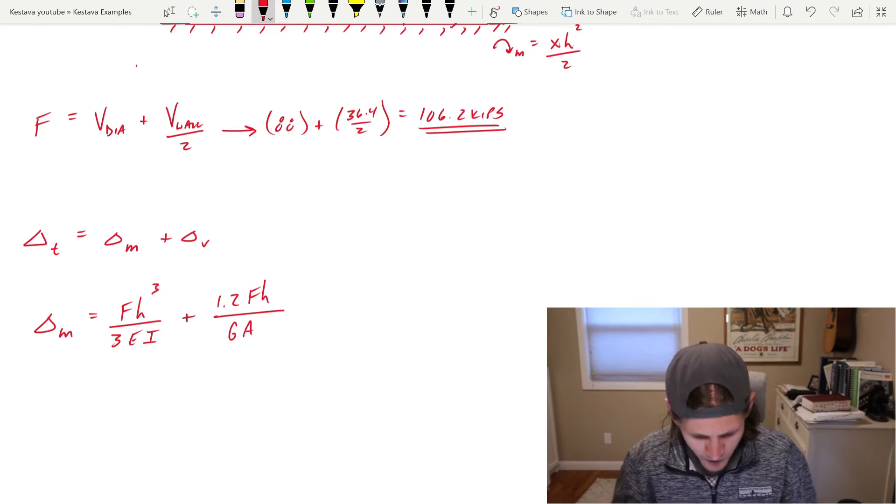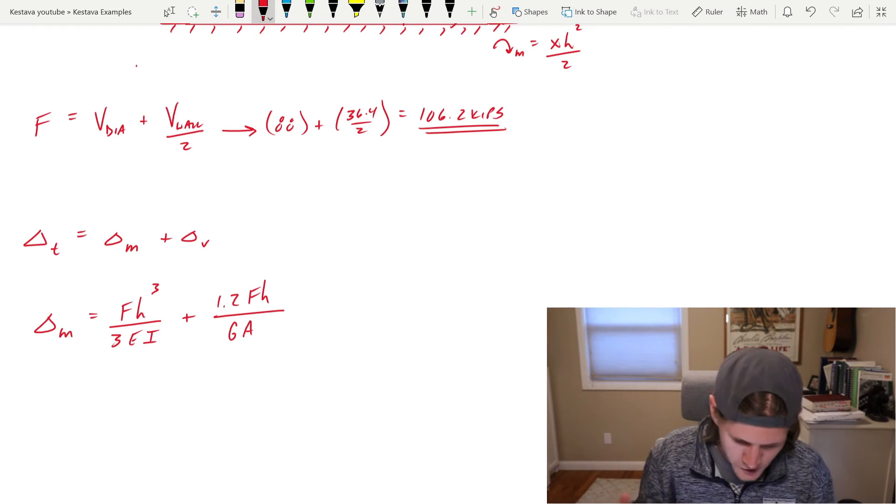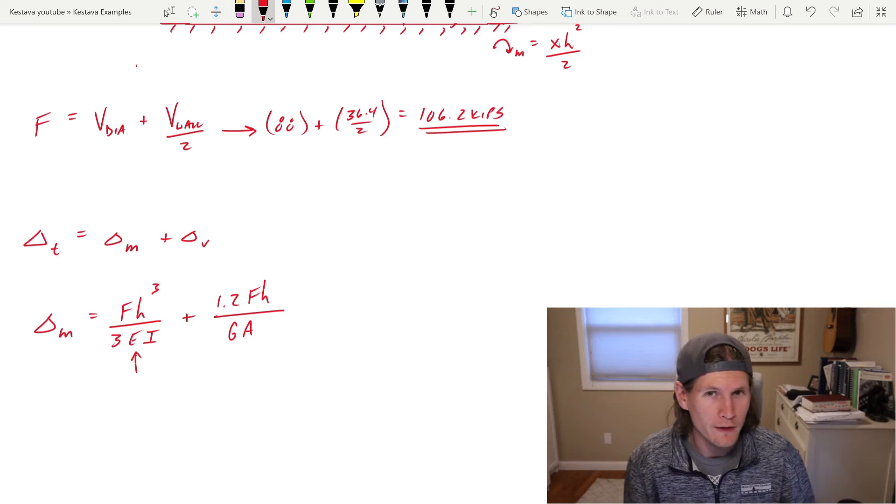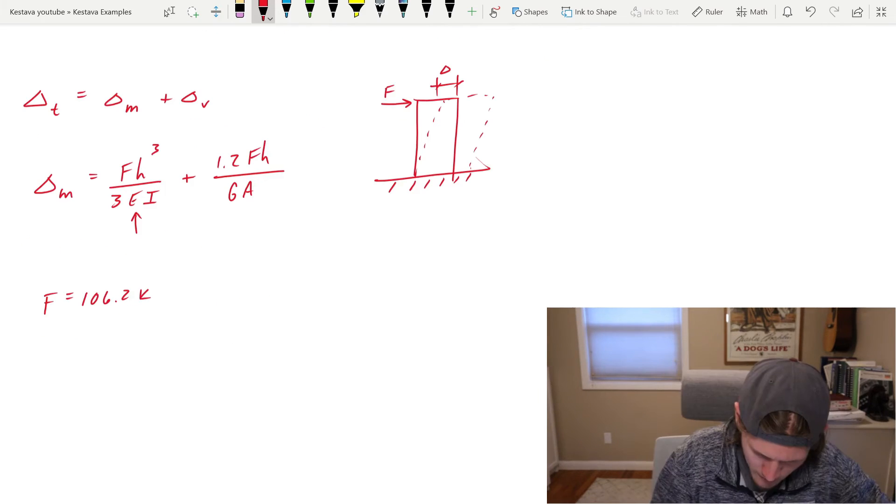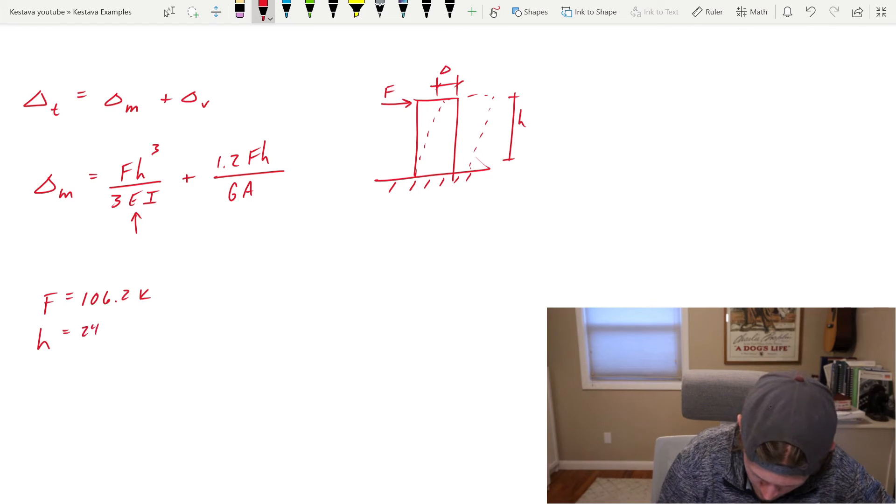And then the other one is deflection due to shear. And that is through the equation. But let's start with the more straightforward one, which is the bending. And you're like, why is that one more straightforward? You're gonna find out.